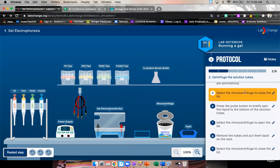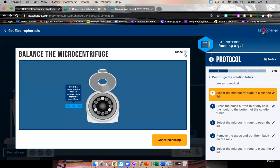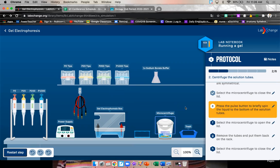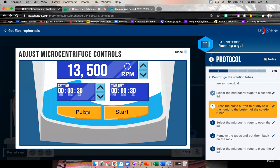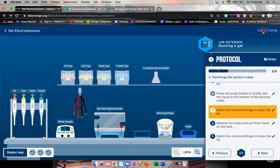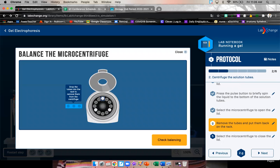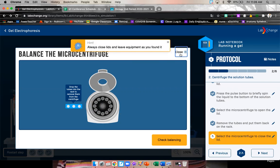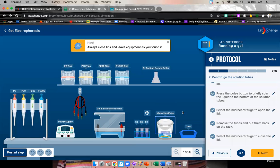Select the microcentrifuge to close the lid. There we go. Press the pulse button to briefly spin the liquid to the bottom of the solution tubes. Pulse for 30 seconds. It's sped up for us. That's fun. Open the lid and remove the tubes to put them back in the rack. And then close the lid. Always close the lid.